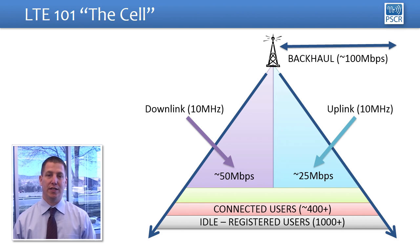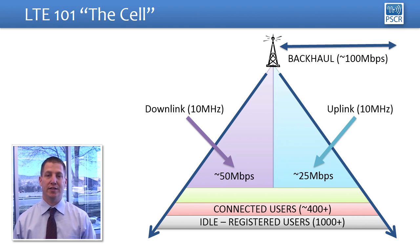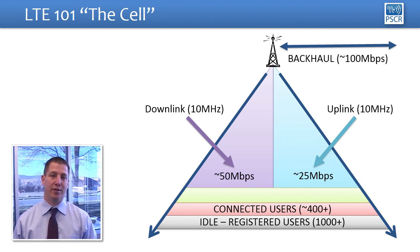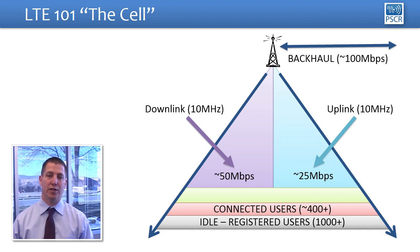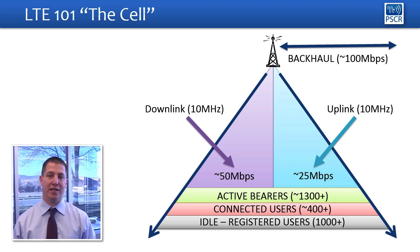Each user, once connected, will use various data services. You could have a voice call and data connections at the same time, so every device can have multiple data connections. The standards say you can have up to eight data connections per device, but the cell itself has an upper limit as well. Typically, we see about 1,300 active data connections in one cell.